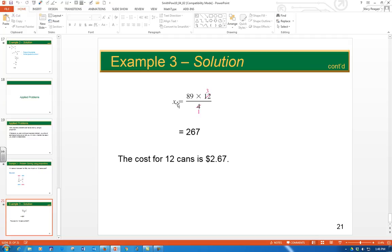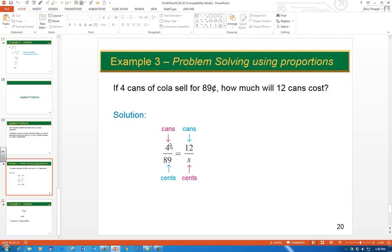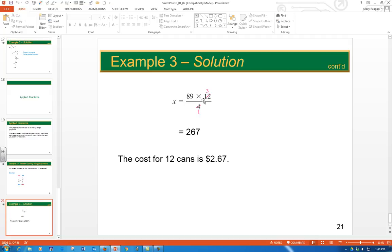And once you get it set up, it looks exactly like what we've been doing. You just cross multiply. So if we look at this one, we cross multiply here and we said 4 times x and 12 times 89, and then we just divide it. So we end up getting 267 and that's in cents.